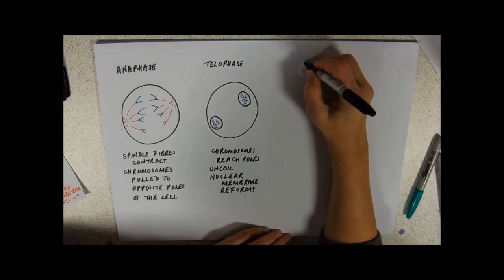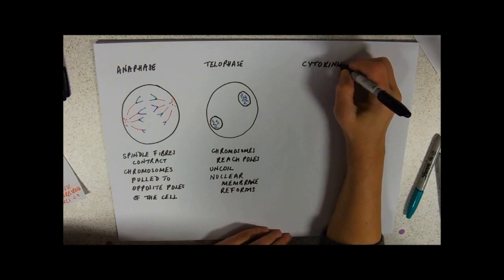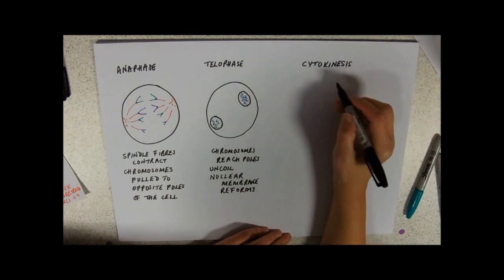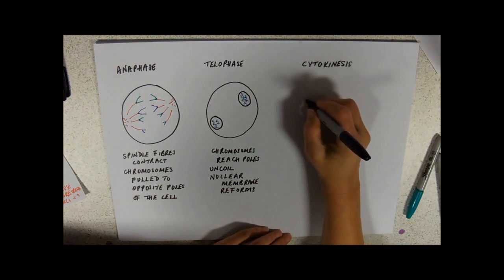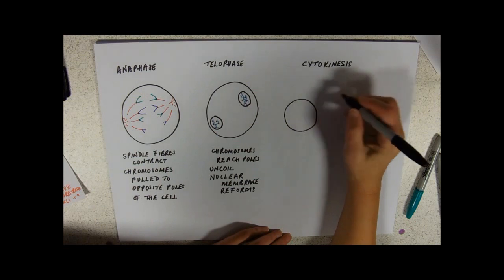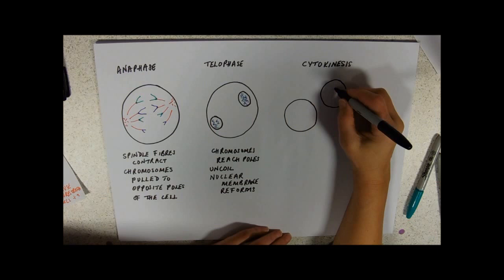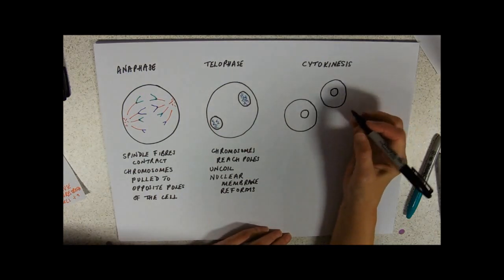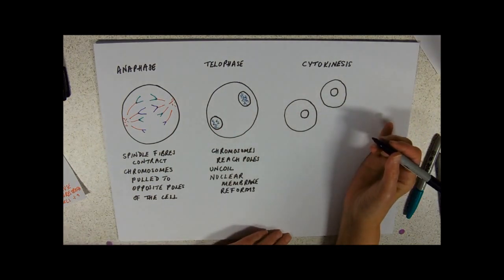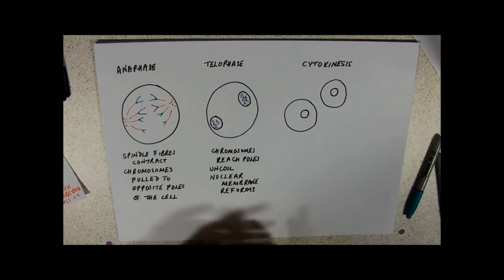And our next phase is cell division proper. Cytokinesis. Cytokinesis just literally means splitting the cytoplasm into two. So now we have to split up the cytoplasm nice and evenly between our two cells. There's our nucleus with its chromatin. And we're back into interphase. Obviously there's going to need to be a bit of growth before you can then split again.